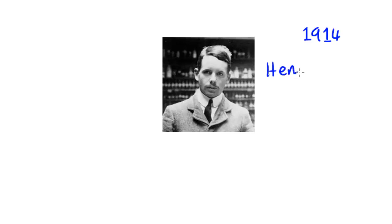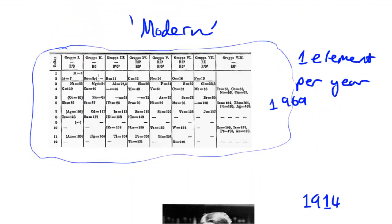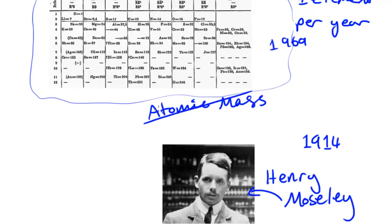Henry Moseley basically transformed the periodic table. The technology available at his time permitted him to actually find out the number of protons in an atom of an element. This meant he could reshape the way the periodic table is ordered — rather than having elements ordered by atomic mass, he could have the elements ordered in terms of atomic number, which is the number of protons in the nucleus of an atom.